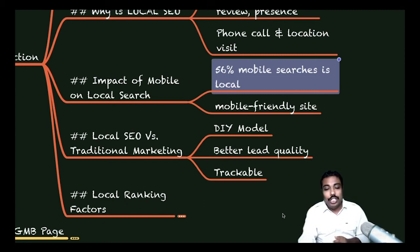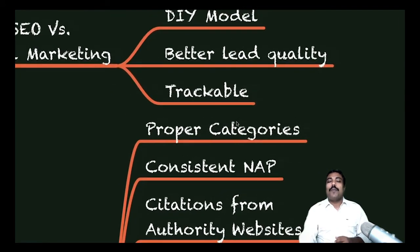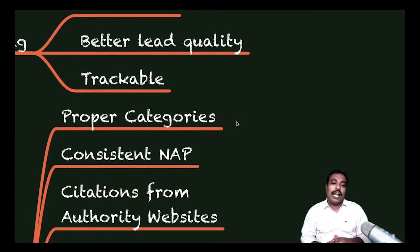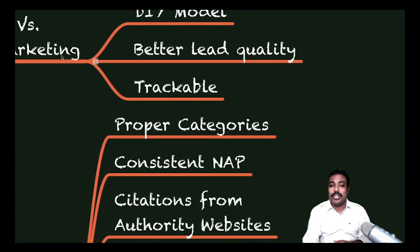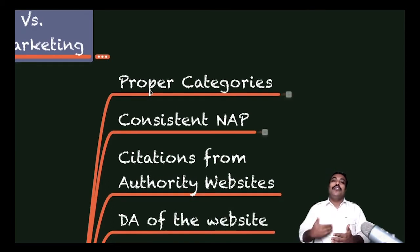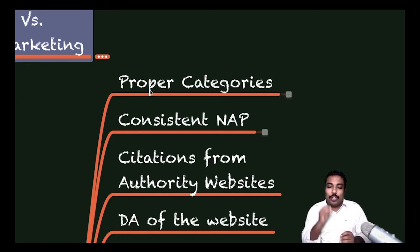Now the most important thing — local SEO ranking factors. Let's go one by one. First one: proper categories. Your business must be listed under the proper category. If it's not in the right category, you won't get the correct audience to your business. Always add categories which are related to your business — don't add everything. Only add those things which are related to your particular business category.